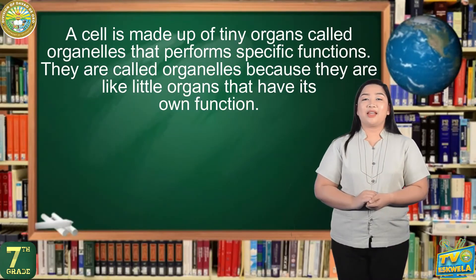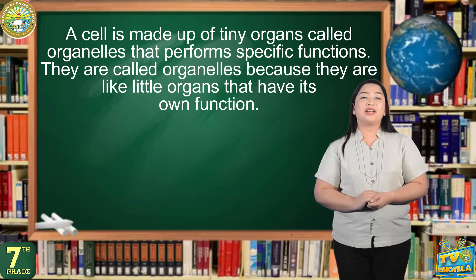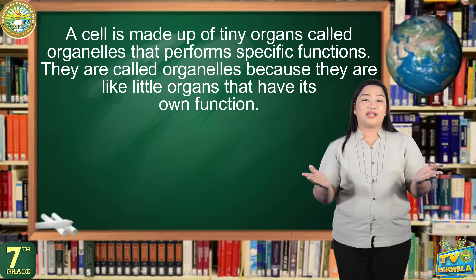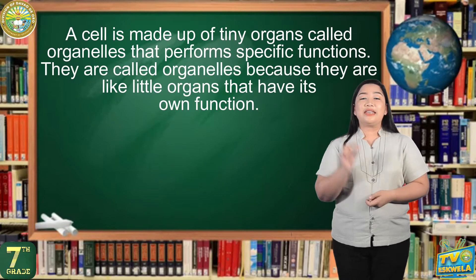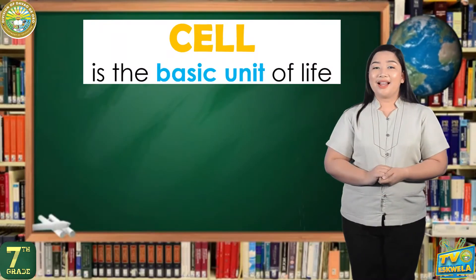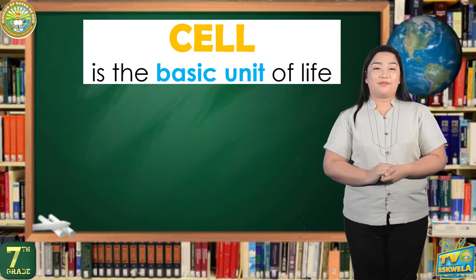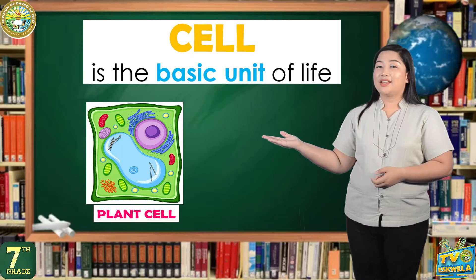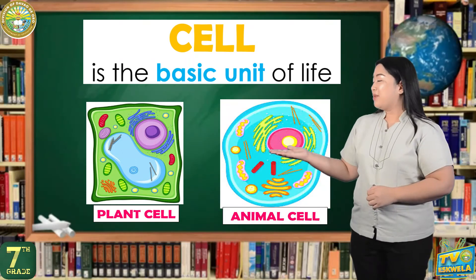A cell is made up of tiny organs called organelles that perform specific functions. They are called organelles because they are like little organs that each have their own function. The cell is the basic unit of life. There are two kinds of cells. We will be differentiating both types of cells, but for now, let's talk about their parts and functions first.